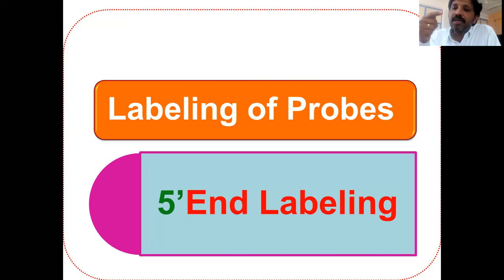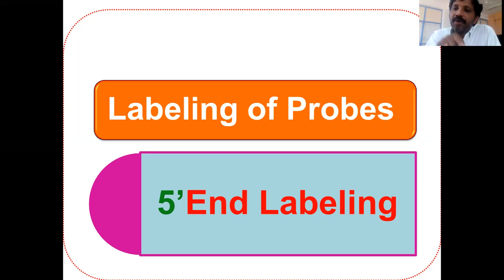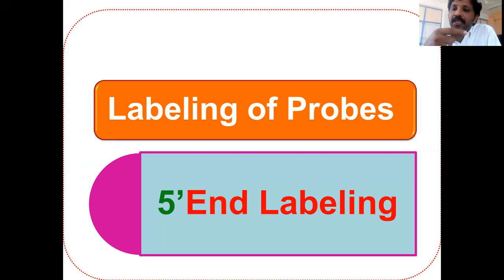All along the molecule means the labels are incorporated into the DNA fragment throughout. Today we will discuss about end labeling, especially 5'-prime end labeling. 5'-prime end labeling means the existing phosphate molecules at the 5'-prime end are replaced with radioactive phosphate molecules — that is what is called 5'-prime labeling.